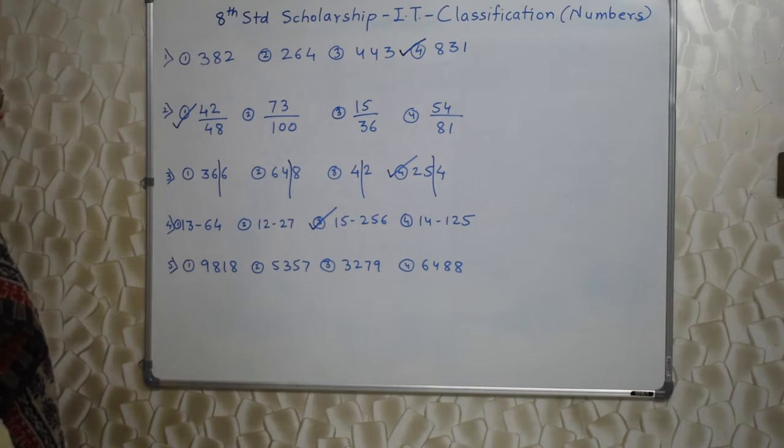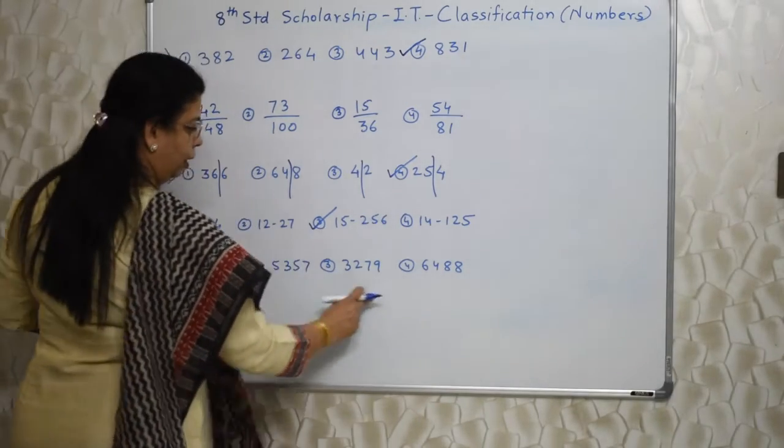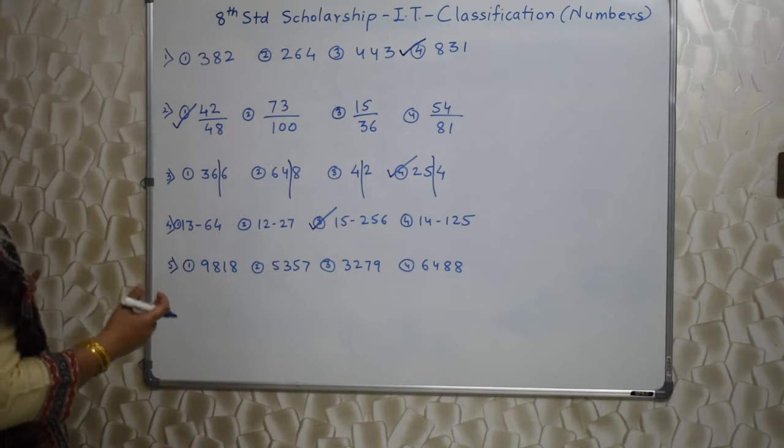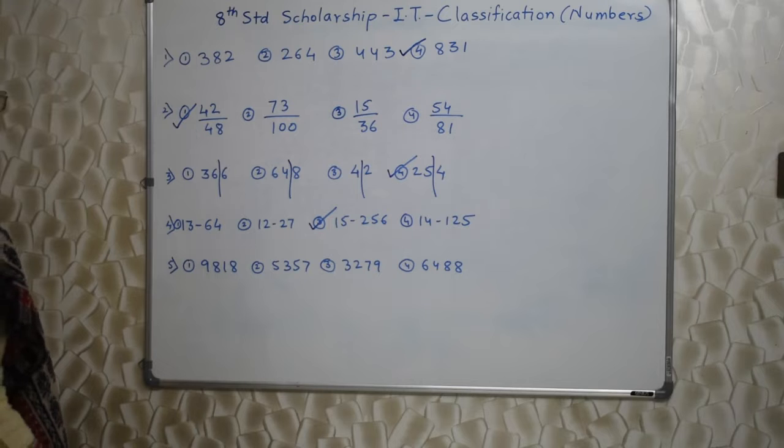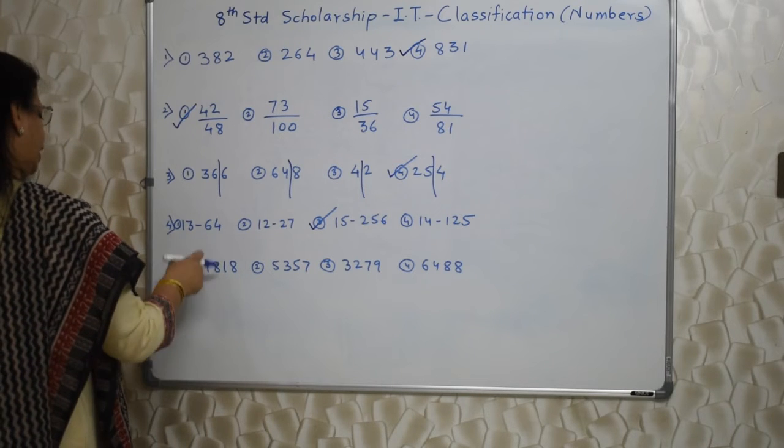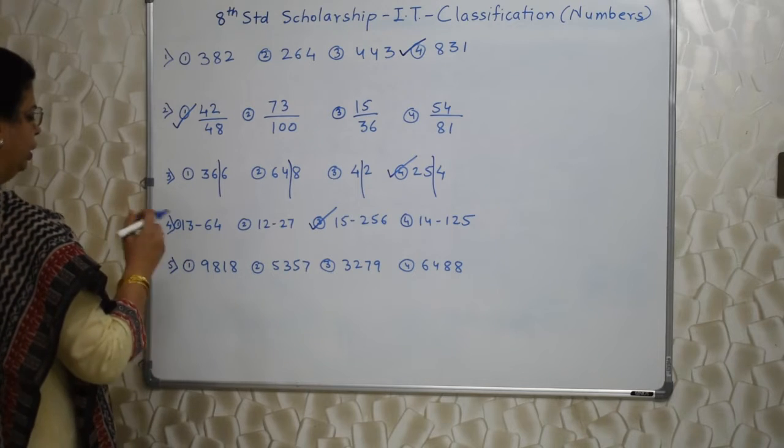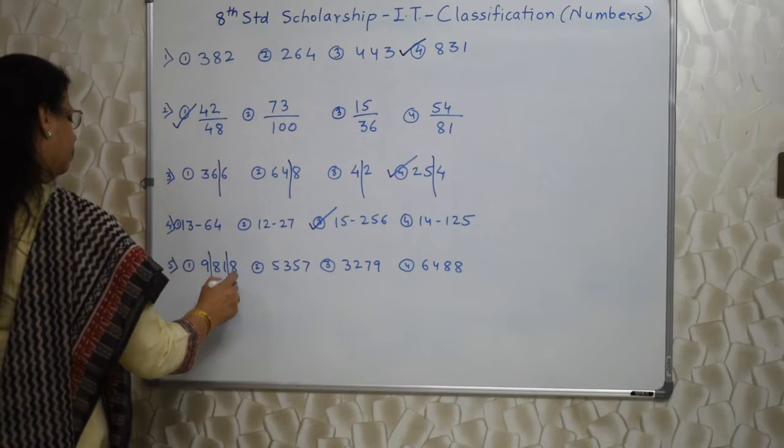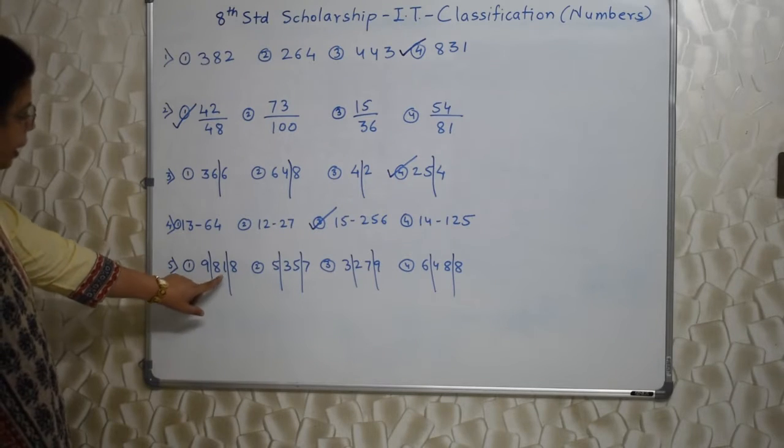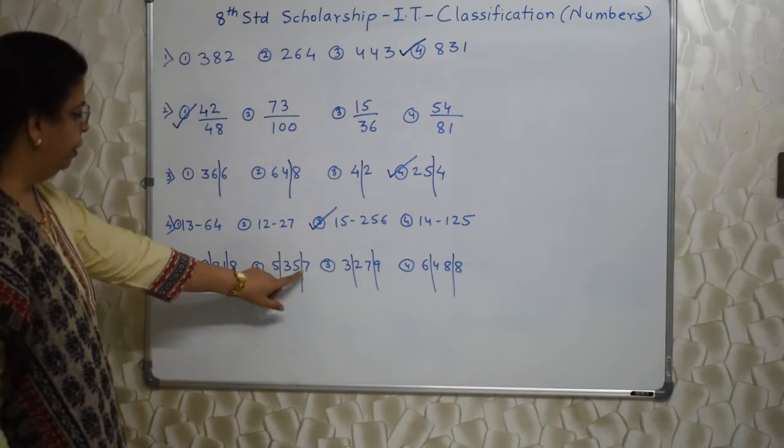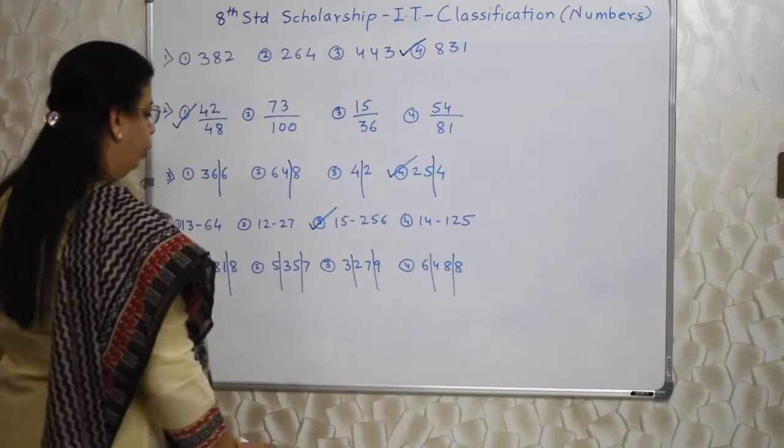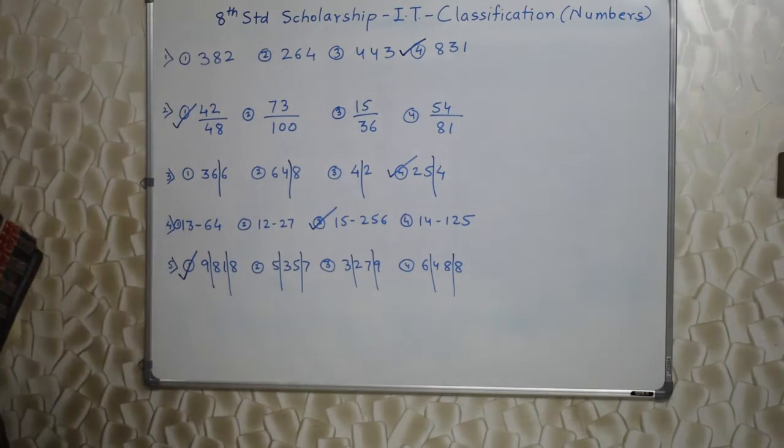Next one. Again, as I told you in the beginning, there are four digit numbers. So probability is that we might have to break them. How to break them? That is intelligence test. Observe the numbers. If I break ninety eight and eighteen, is it going to help me? Or should I break it one digit? Or should I make a combination of one digit and two digit? See, here I am trying to break it like this. Let me see. Nine into eight is seventy two. No. Five into seven is thirty five. Correct. Three into nine is twenty seven. Correct. Six into eight is forty eight. Correct. So this one is not correct. So our answer is first option.